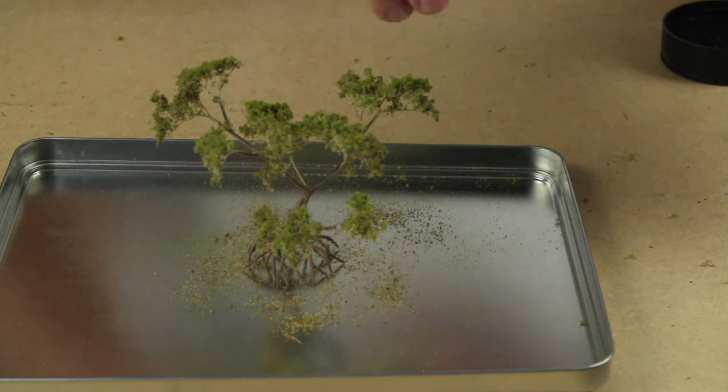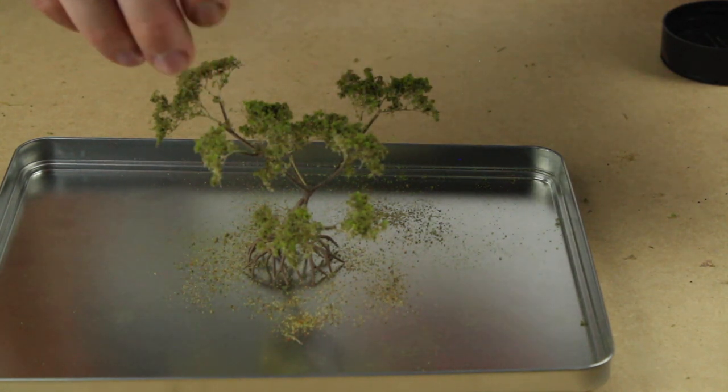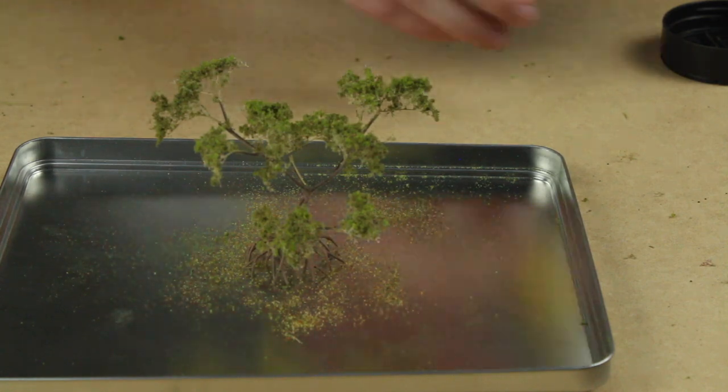To give a little bit more color variation, I sprinkled a small amount of Earth Blend blended turf over the top of the tree.